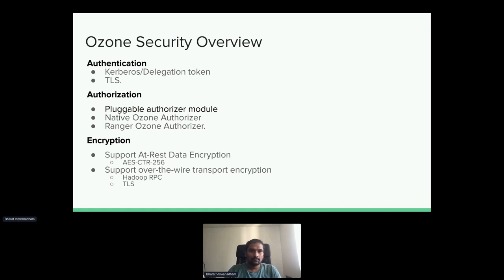On the authorization side, we implement a pluggable model. We support both the native Ozone authorizer, which is similar to POSIX semantics, and the Ranger plugin, which is also included as part of the Ozone GA release. On the encryption side, we have support for at-rest data encryption, so you can create an encrypted bucket where all data at rest will be in an encrypted format. We also support wire transport encryption for both Hadoop RPC and gRPC TLS.